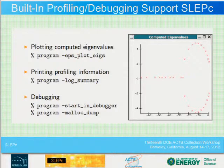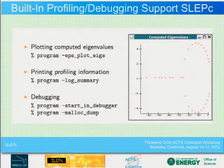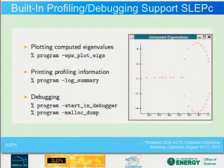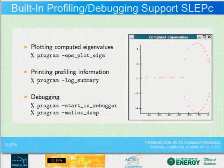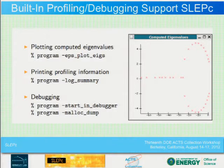For profiling, you can use log summary. SLEPC adds information about the eigenvalue solvers to the profile — including memory use, flops, and time per processor for certain routines. For debugging, you can start a debugger or do a malloc dump, which gives information about memory allocation traces.